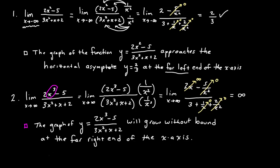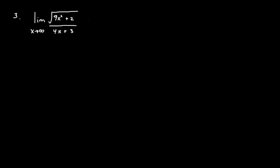The numerator grows without bound while the denominator approaches three, so that whole thing is going to go to infinity. You should have known that from the beginning because the highest degree in the numerator is larger than the highest degree in the denominator. The graph of y equals will grow without bound at the far right end of the x-axis.